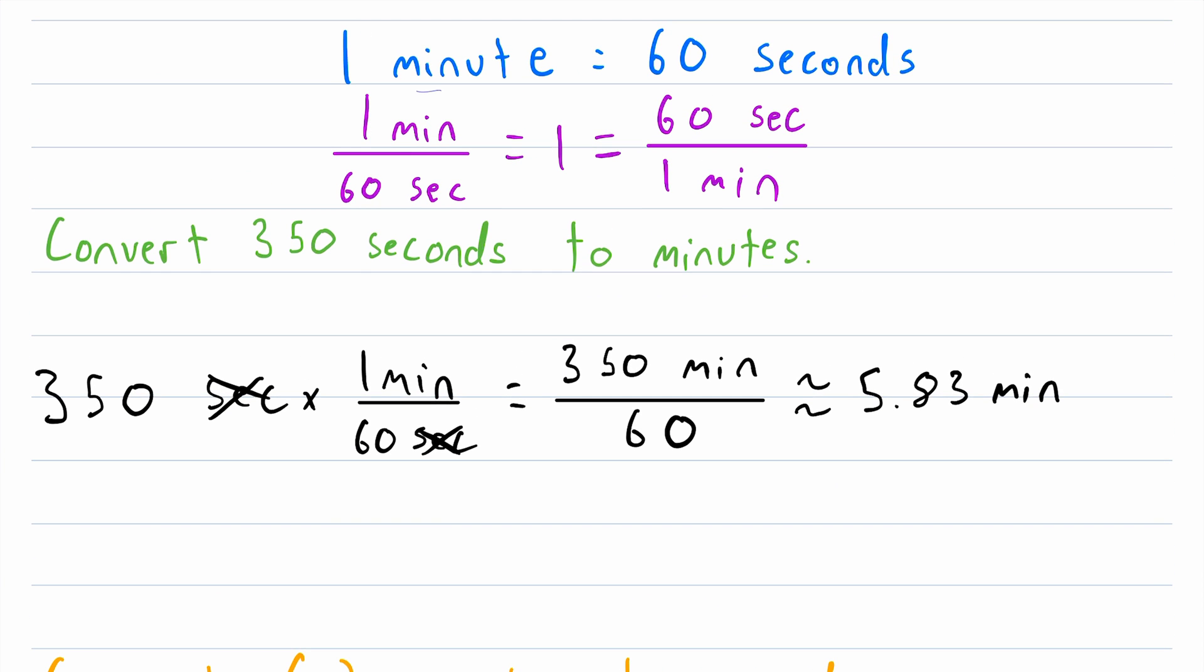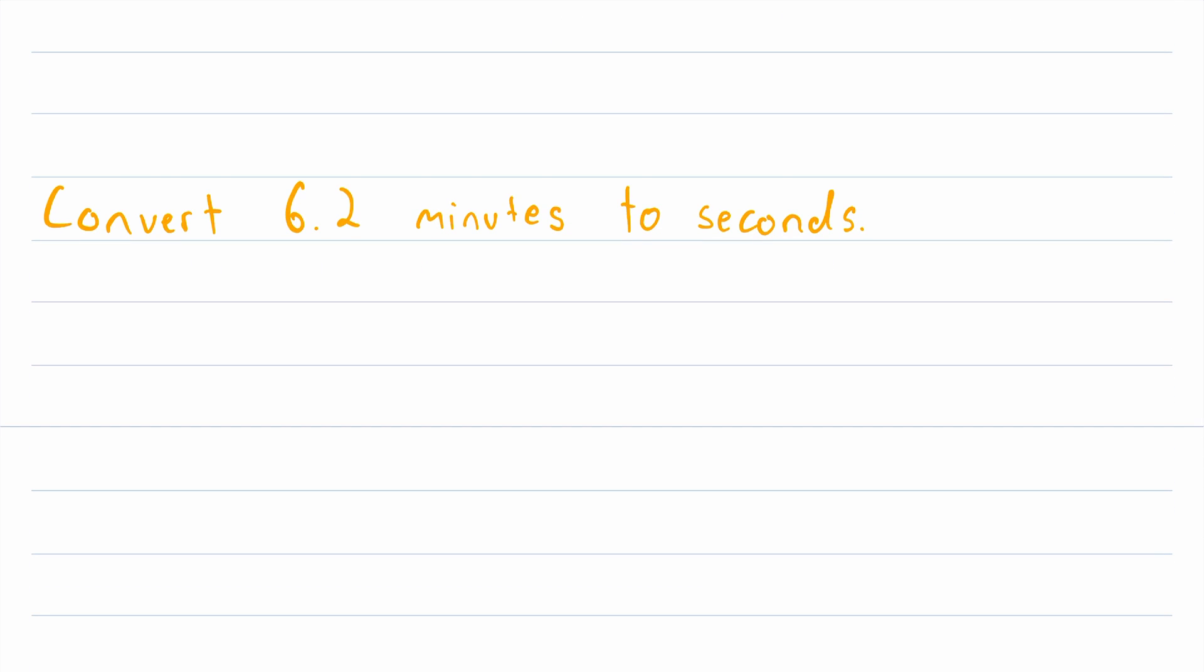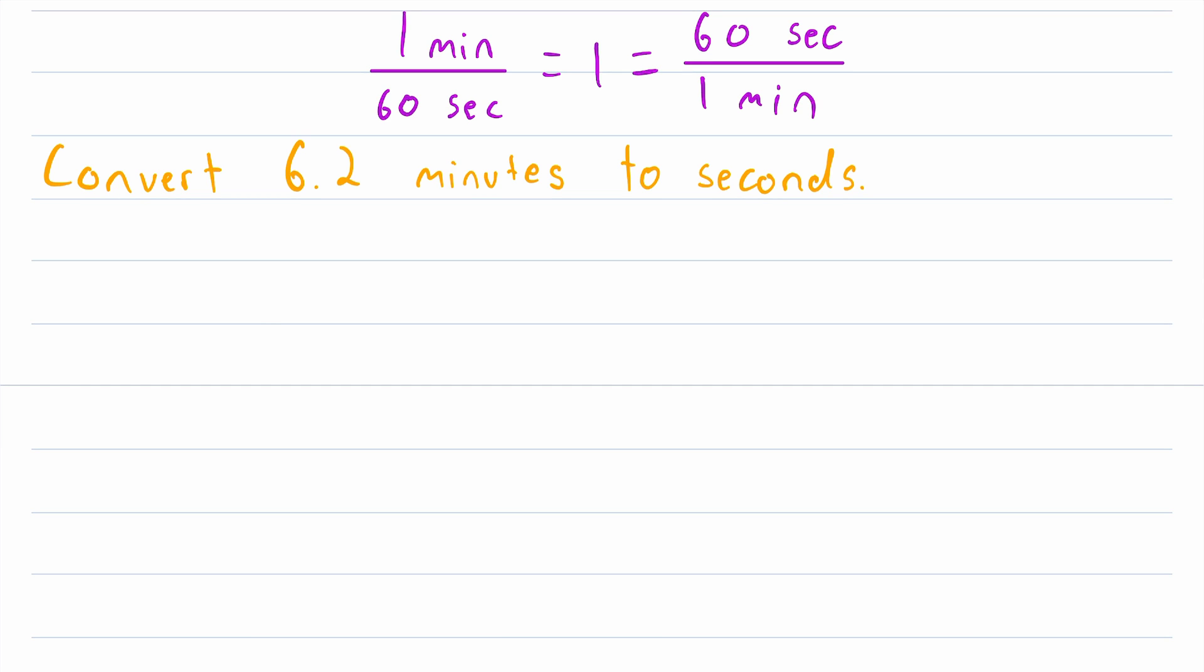All right, now let's do an example where we are converting minutes to seconds. So let's say we are asked to convert 6.2 minutes to seconds. And let me bring our conversion factors down so we can look at them for this example. I'll just copy and paste them. This is the magic of technology, paste those conversion factors right there. All right, so let's go ahead and write down our number of minutes we're working with 6.2 minutes. In this case, we want to get rid of the minutes unit because we're trying to convert to seconds. So we're going to multiply by the conversion factor that has minutes in the denominator. So let's go ahead and do that.